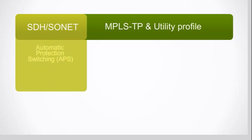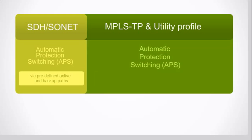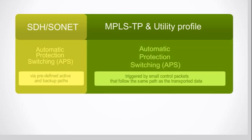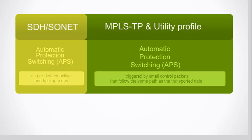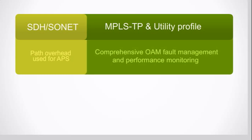SDH/SONET uses automatic protection switching via predefined active and backup paths. MPLS-TP uses similar automatic protection switching triggered by small control packets that follow the same path as the transported data — guaranteeing reconfigurations as quick as SDH/SONET under all circumstances. MPLS-TP also comes with a comprehensive set of OAM fault management and performance monitoring features, allowing you to monitor services and engage in proactive, easy fault location to limit downtime.